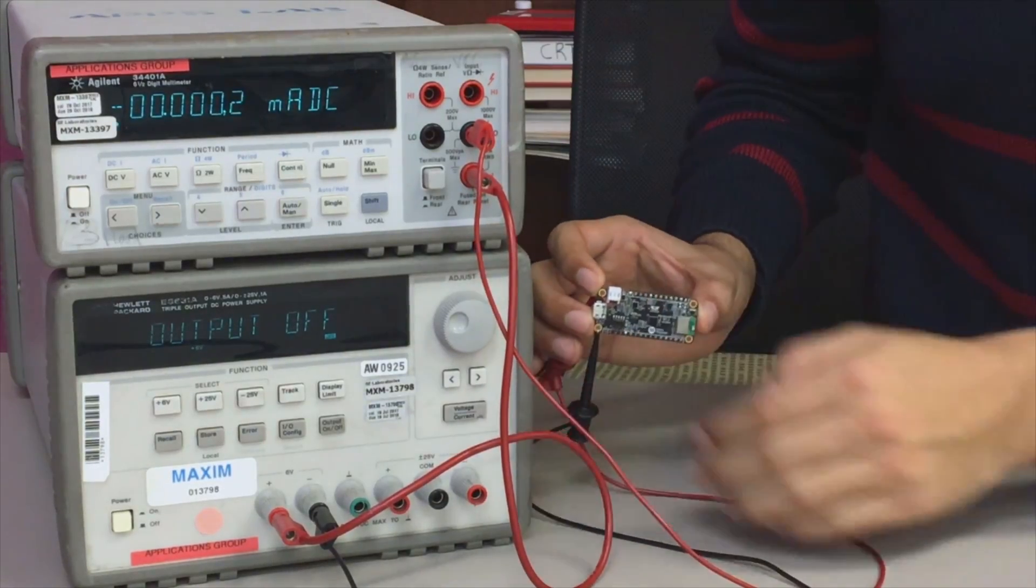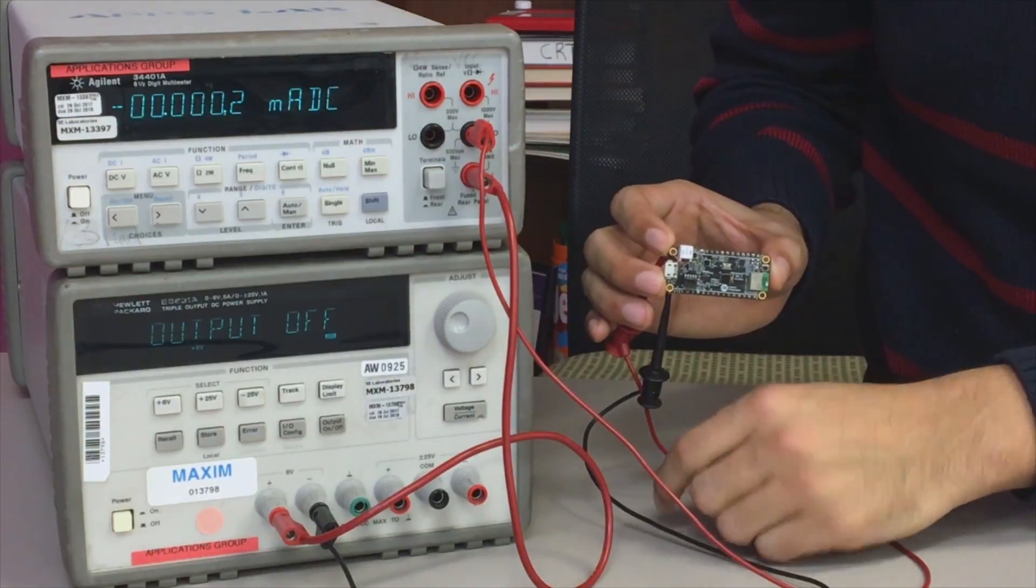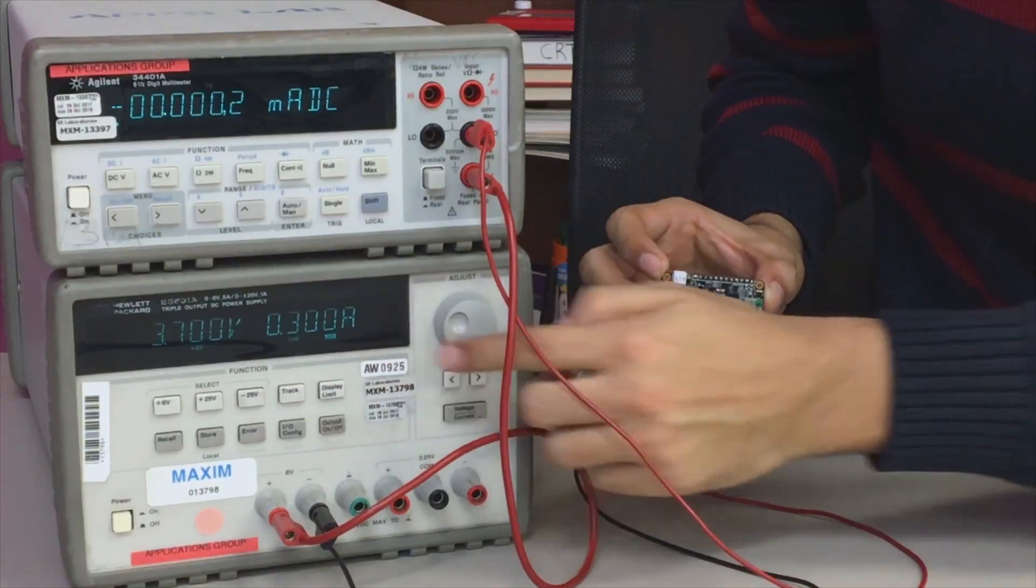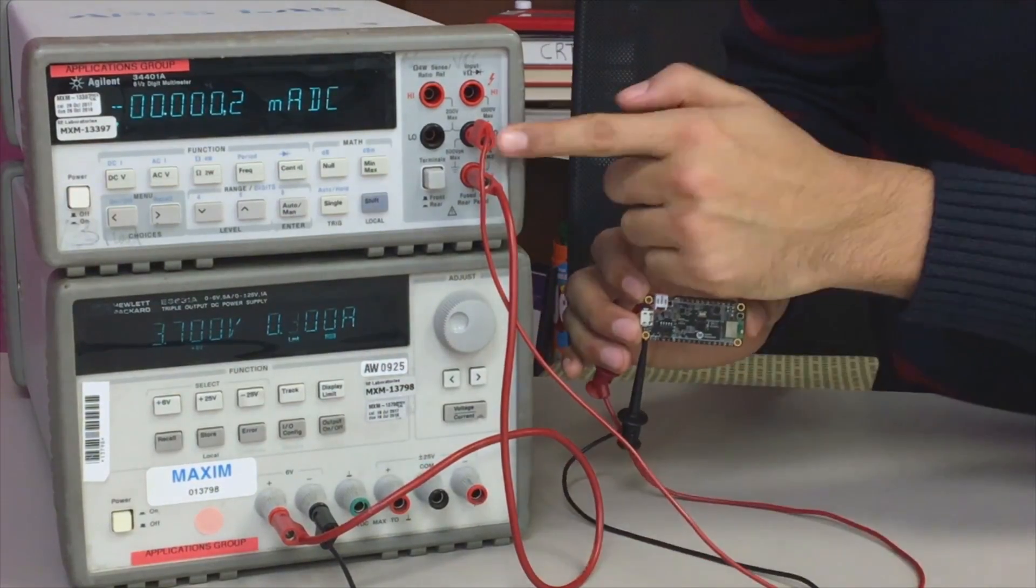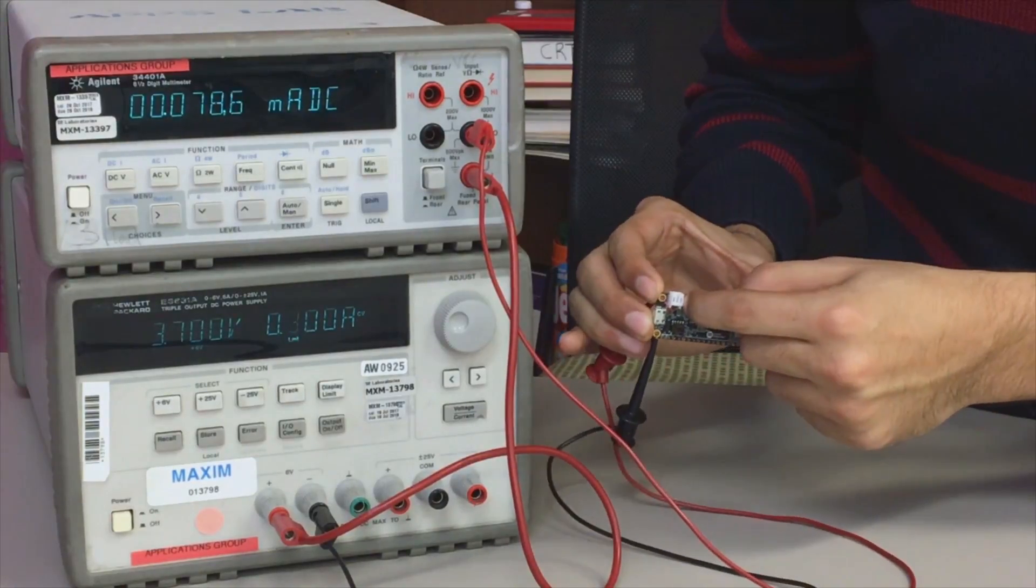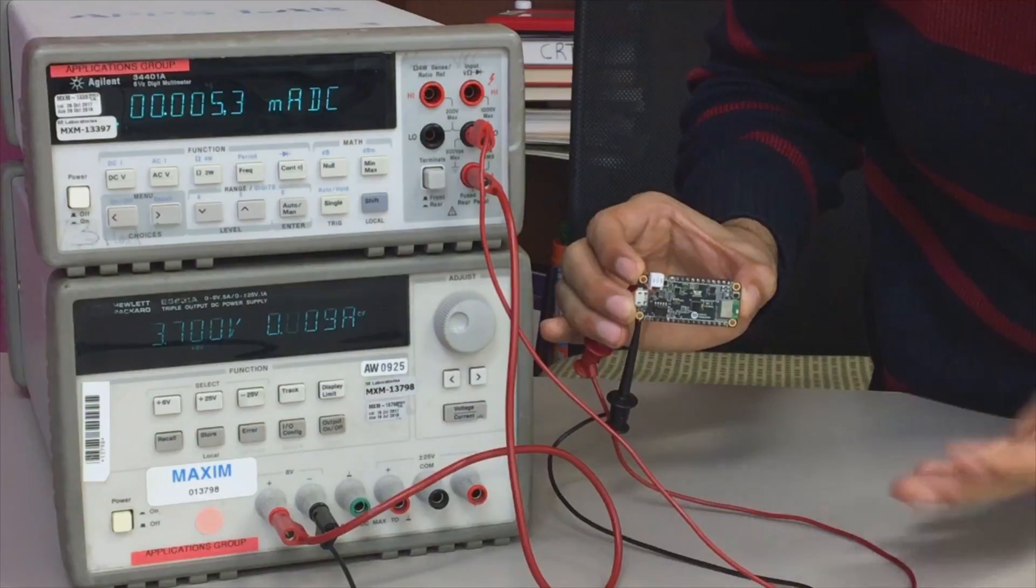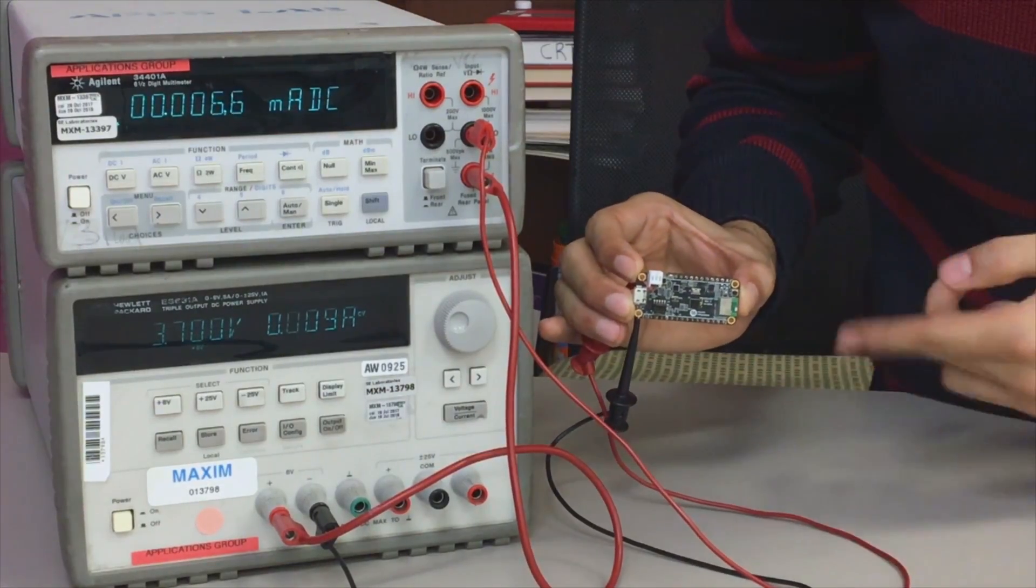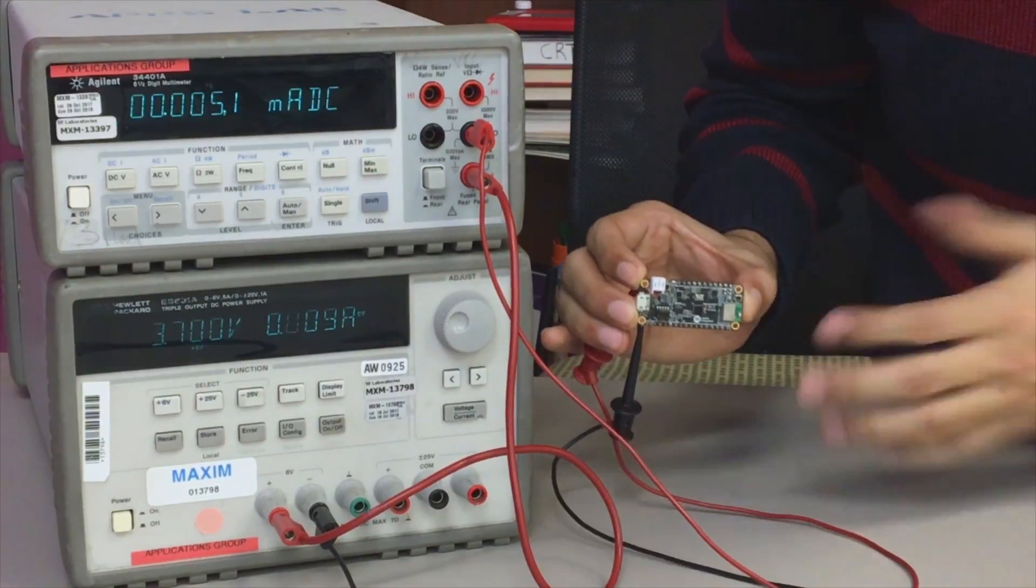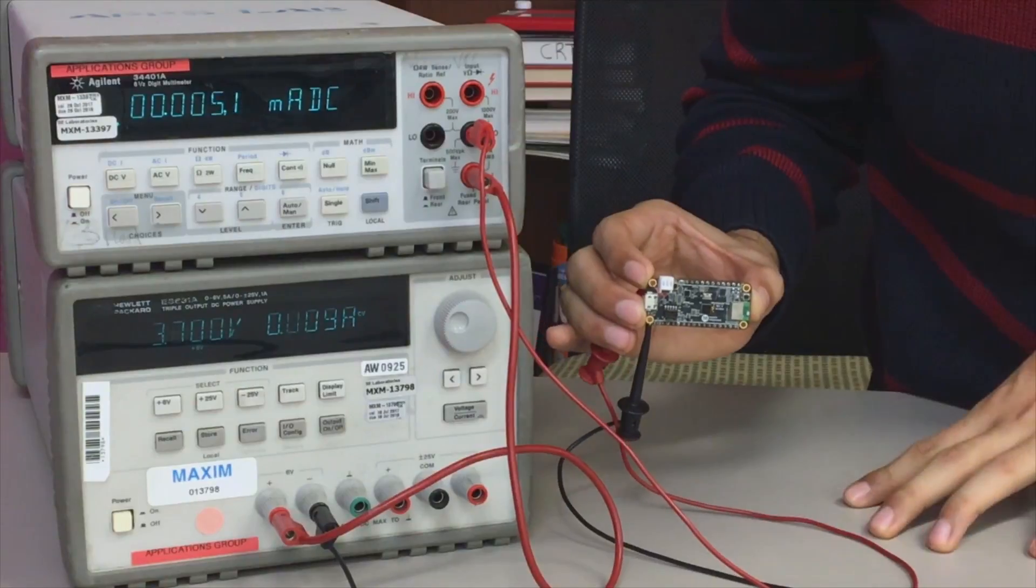So here I have a power supply configured for 3.7 volts which is a typical single cell rechargeable battery voltage and I have a six and a half digit precision ammeter. If I enable my power supply and press the reset button to enable my board you'll see the flash and then the board will drop down to five microamps and then when the LED flashes you'll see the current spike back up to like three milliamps or so. But there you go, you can see every five seconds the board flashes which means RTC is working.